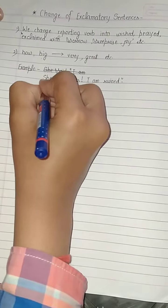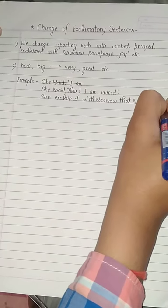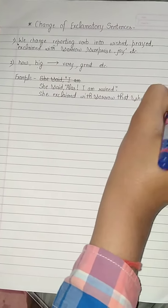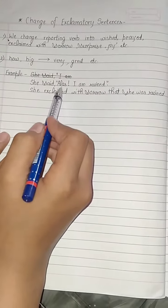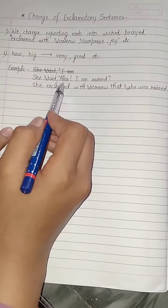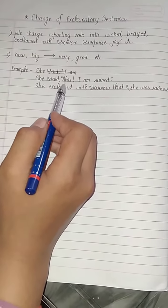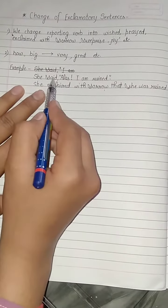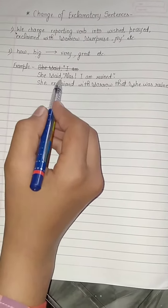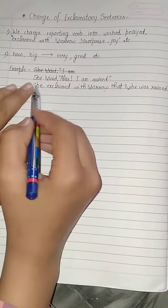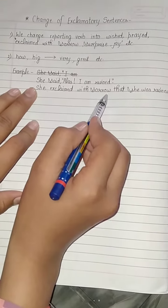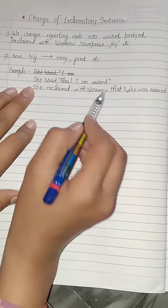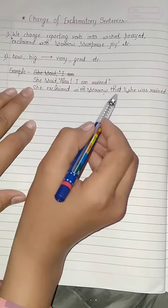Now, as we all know, 'alas' is an interjection word which shows the feeling of sadness. So 'she exclaimed with sorrow' means she is very sad that she was ruined.